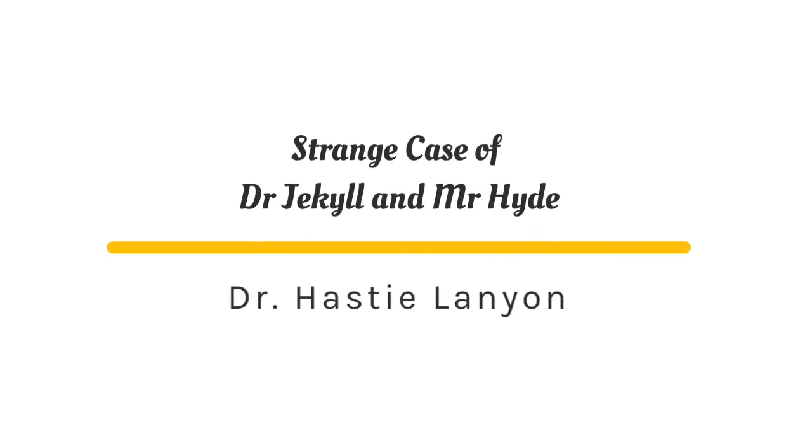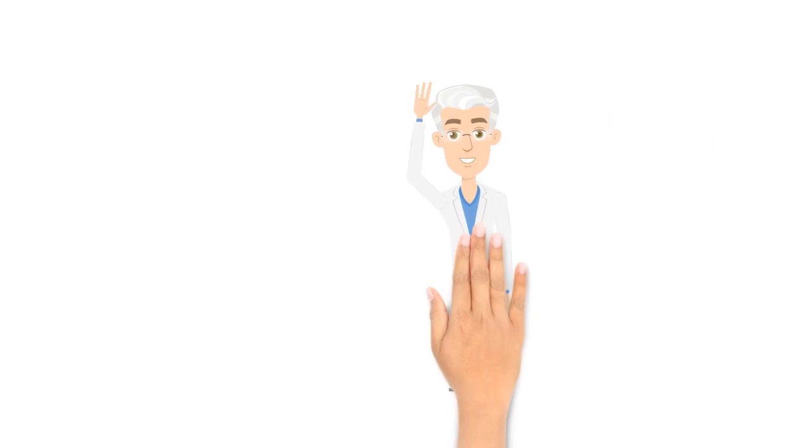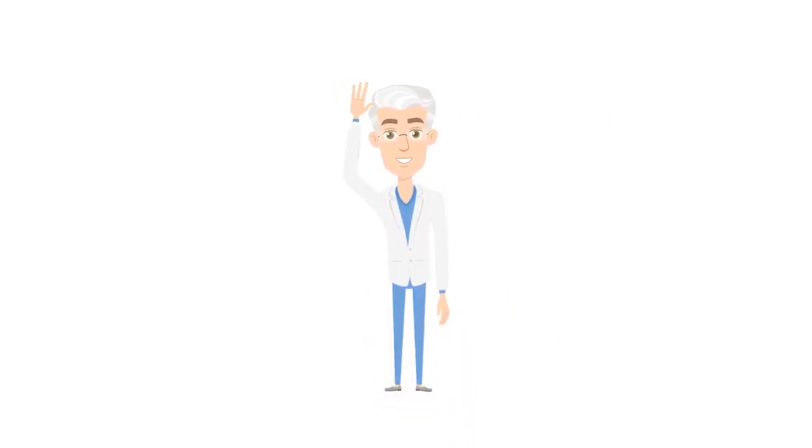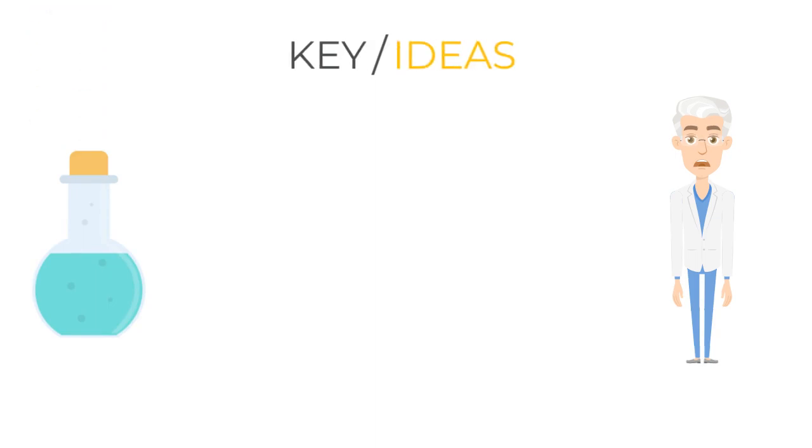For this video, we're going to look at the role of Lanyon in Jekyll and Hyde. Although his role is secondary to the plot compared to that of Jekyll, Hyde, or Utterson, he has an important symbolic function.